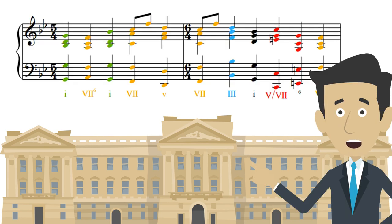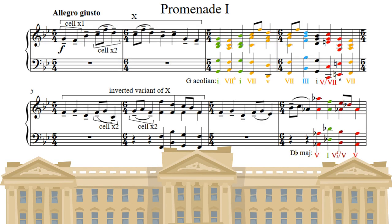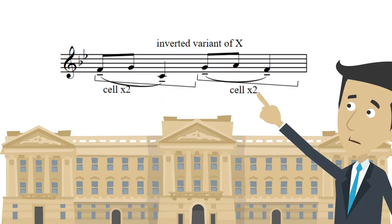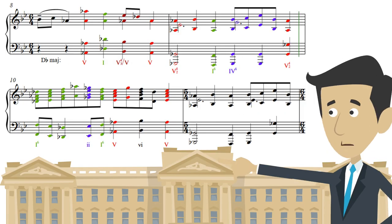The modality is in Aeolian, and the harmony is modal. Measures 8 to 11 is modulated to Db major, where the tonality is in major key.